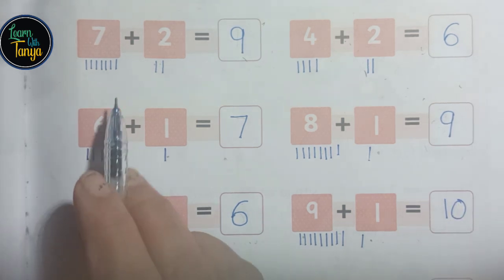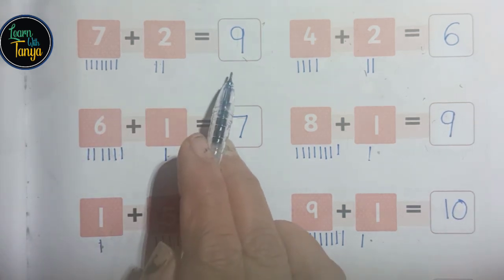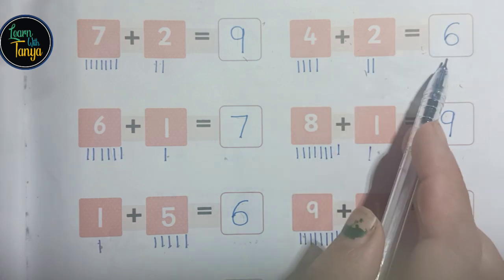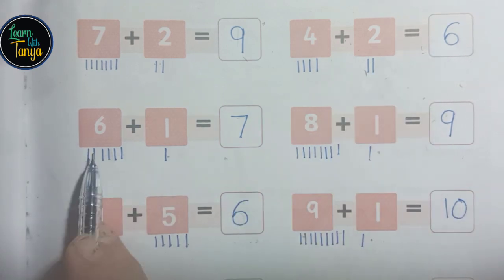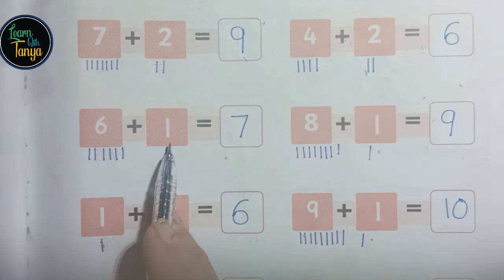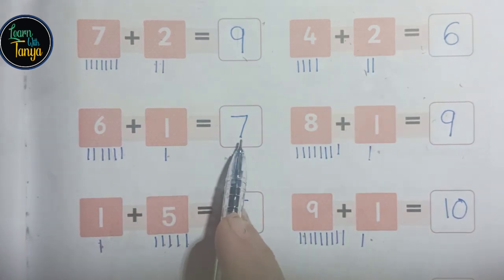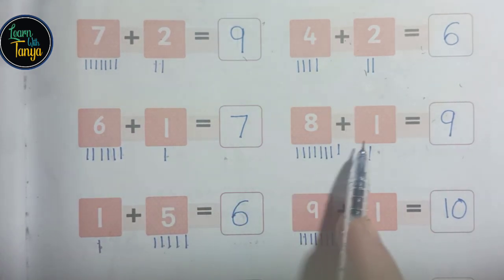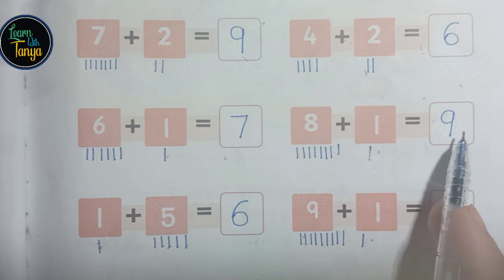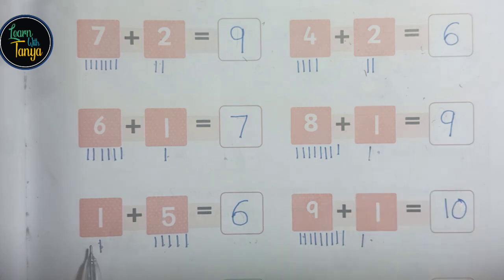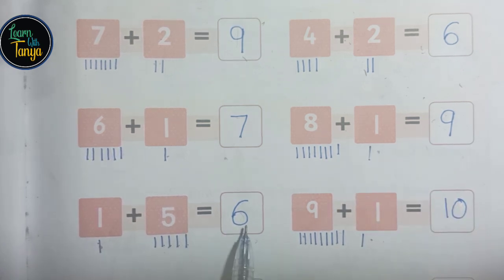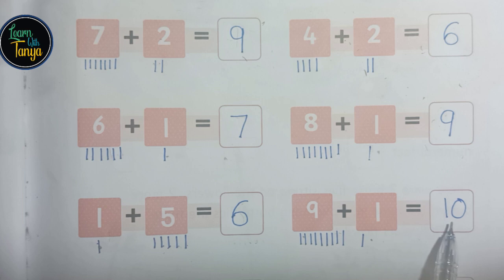7 plus 2, 9. 4 plus 2, 6. 6 plus 1, 7. 8 plus 1, 9. 1 plus 5, 6. 9 plus 1, 10.